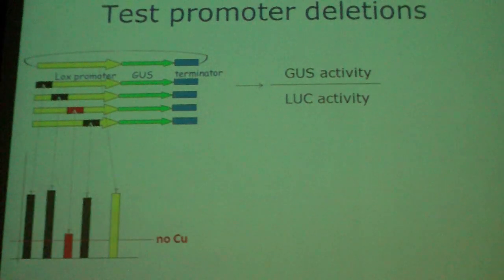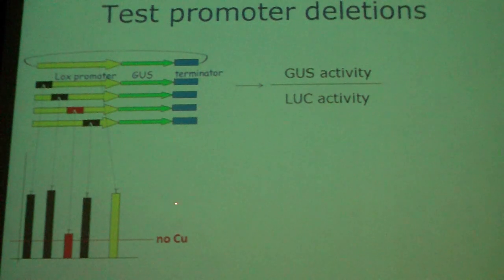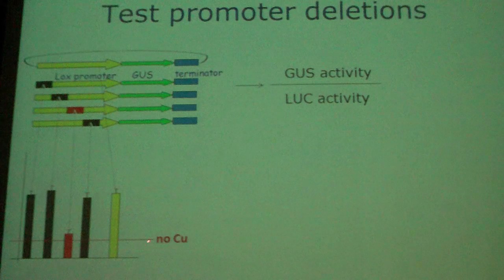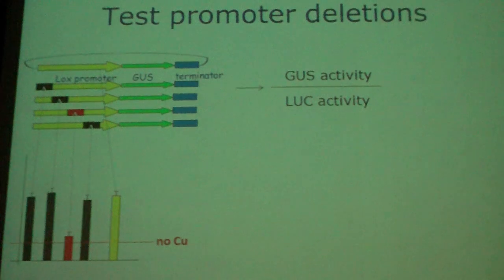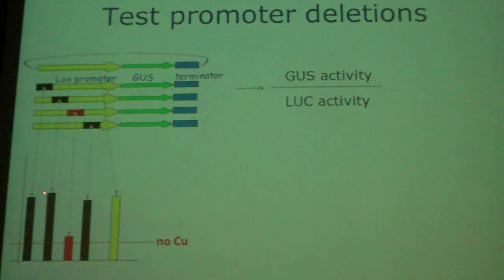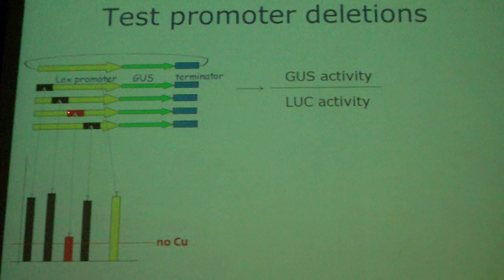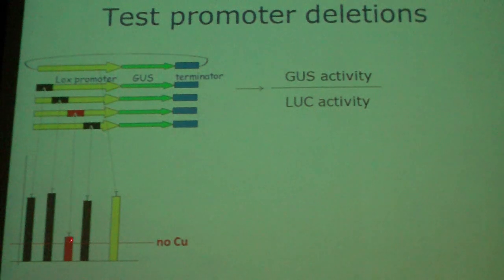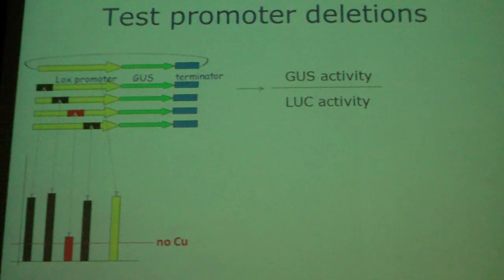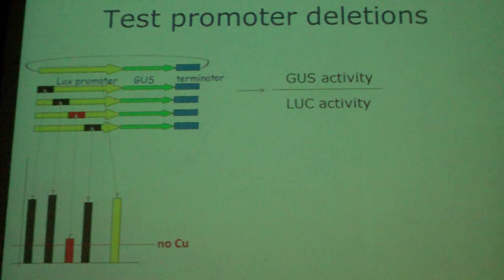Comparing the normalized GUS/luciferase ratio: the full-length promoter is activated by excess copper, showing higher expression. All other deletion constructs also show induction, except when we remove a specific 20 base pair region — the induction is lost and expression returns almost to control levels. This tells us that the 20 base pair region we removed is important for induction of the promoter by the environmental trigger.